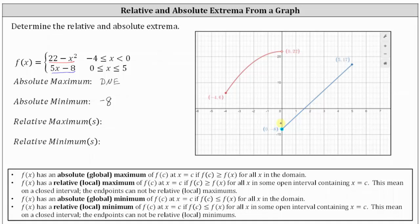Now let's determine whether we have any relative extrema. f of x has a relative or local maximum of f of c at x equals c if f of c is greater than or equal to f of x for all x in some open interval containing x equals c. So because x equals c must be in some open interval, we must be able to approach x equals c from the left and right for f of c to be a relative or local maximum.